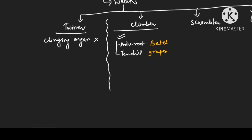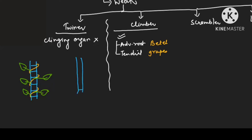Looking at twiners carefully — this is one stem on which the twiner climbs. The twiner is climbing this way and it is bearing a leaf. Twiners can be sinistrose (anticlockwise) or dextrose (clockwise). Dextrose is also known as clockwise because it is moving in the clockwise direction, and sinistrose is anticlockwise.